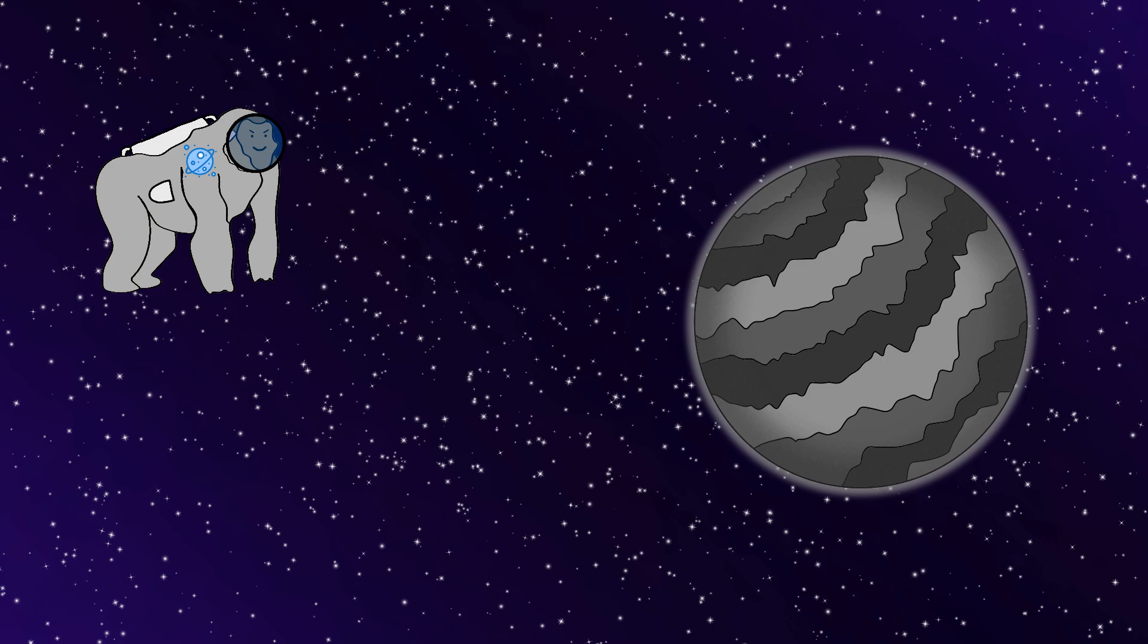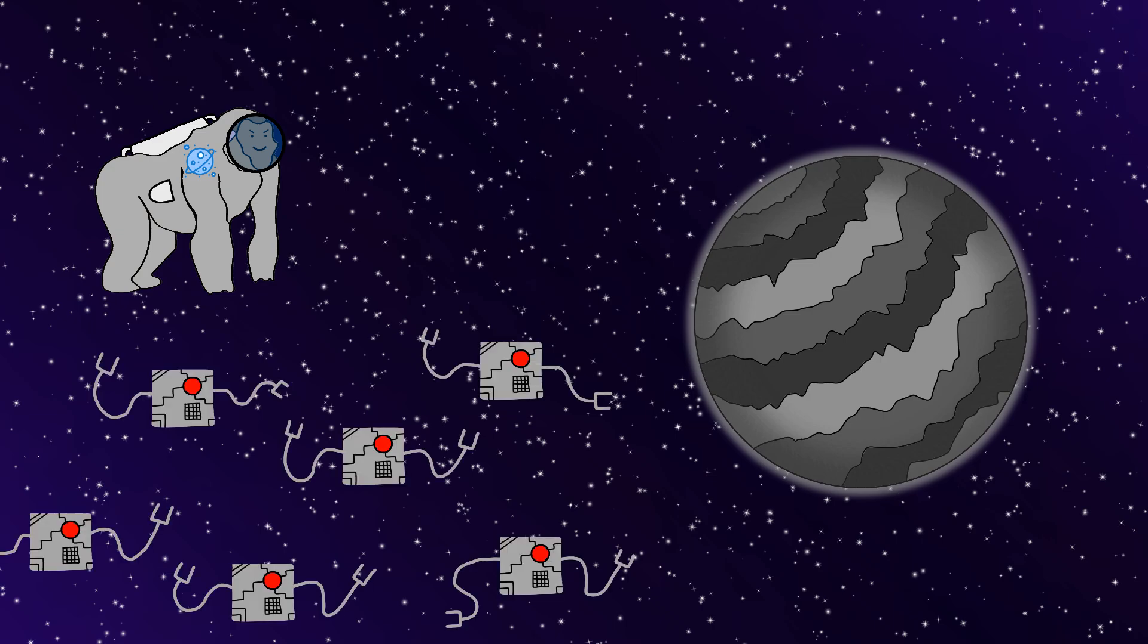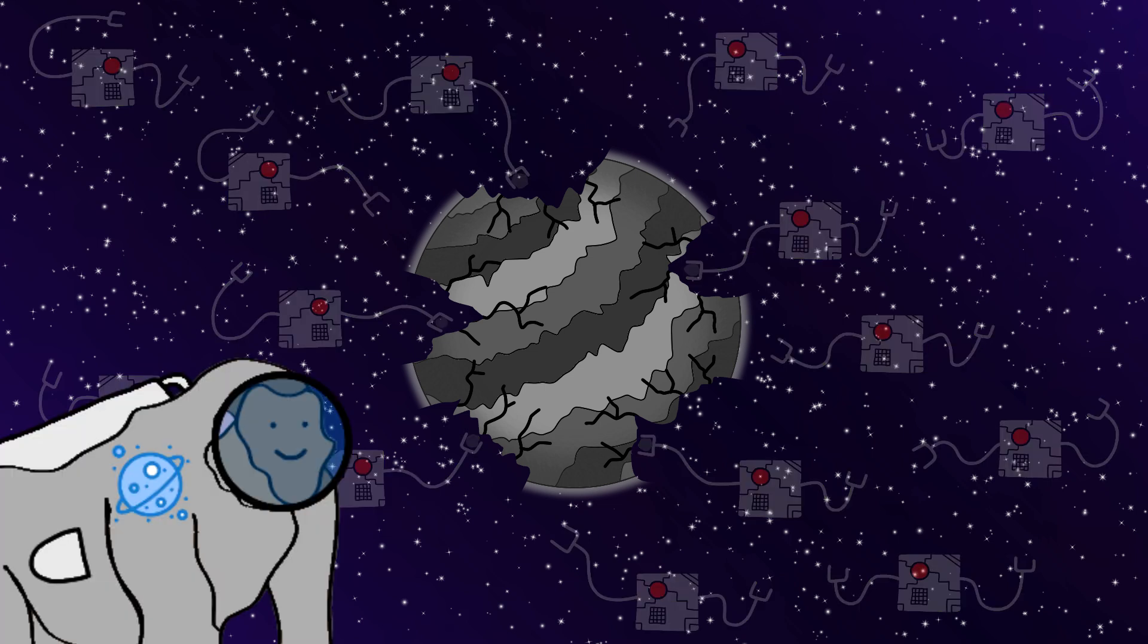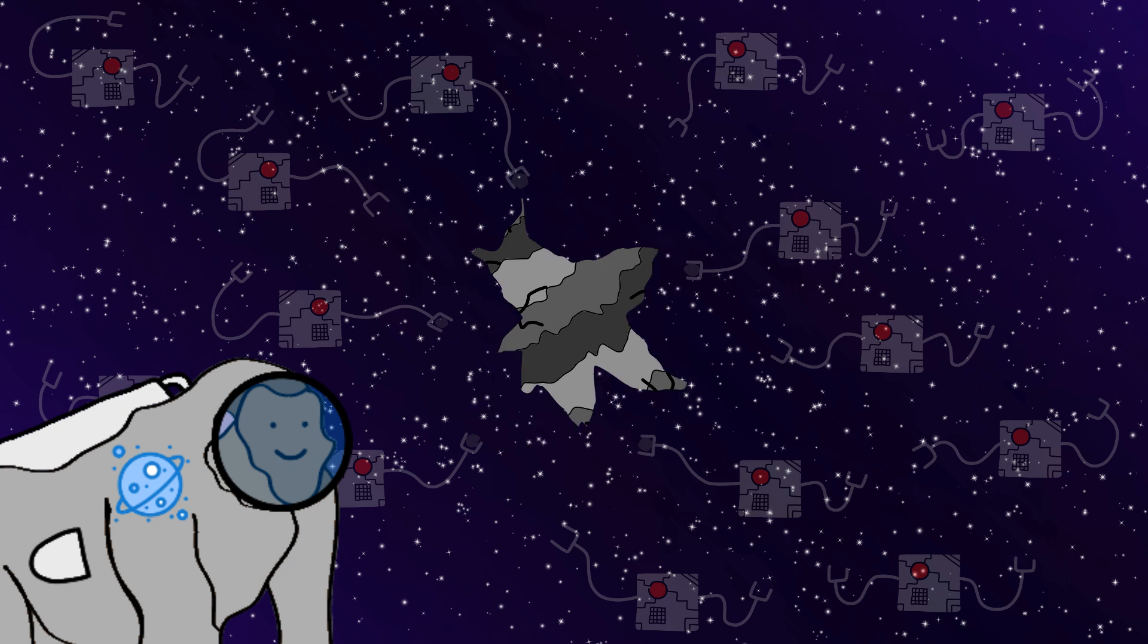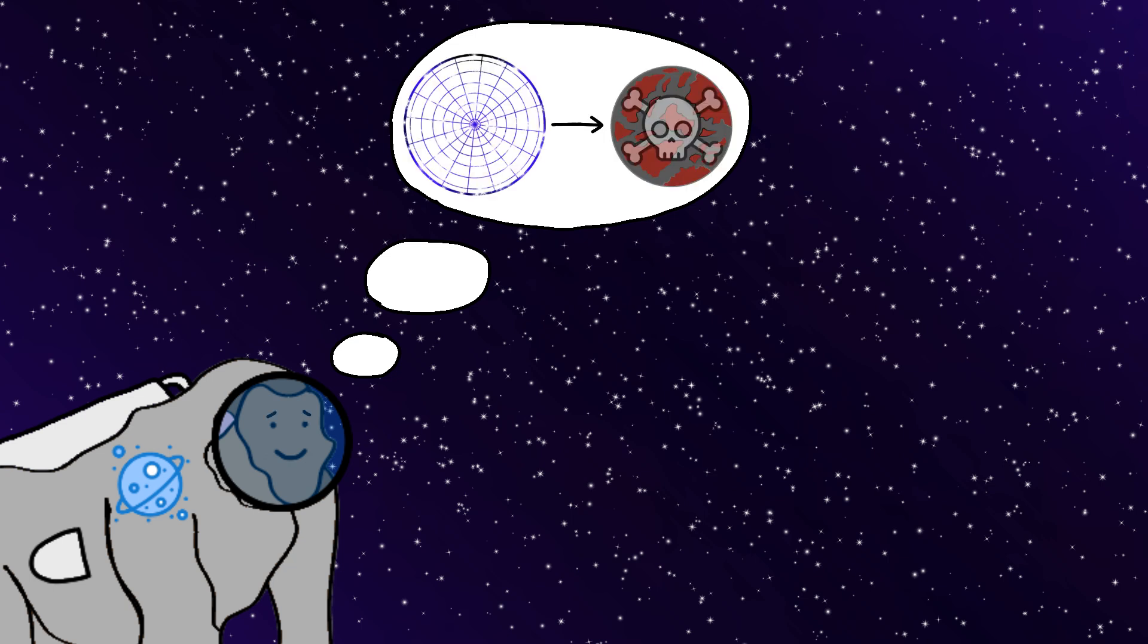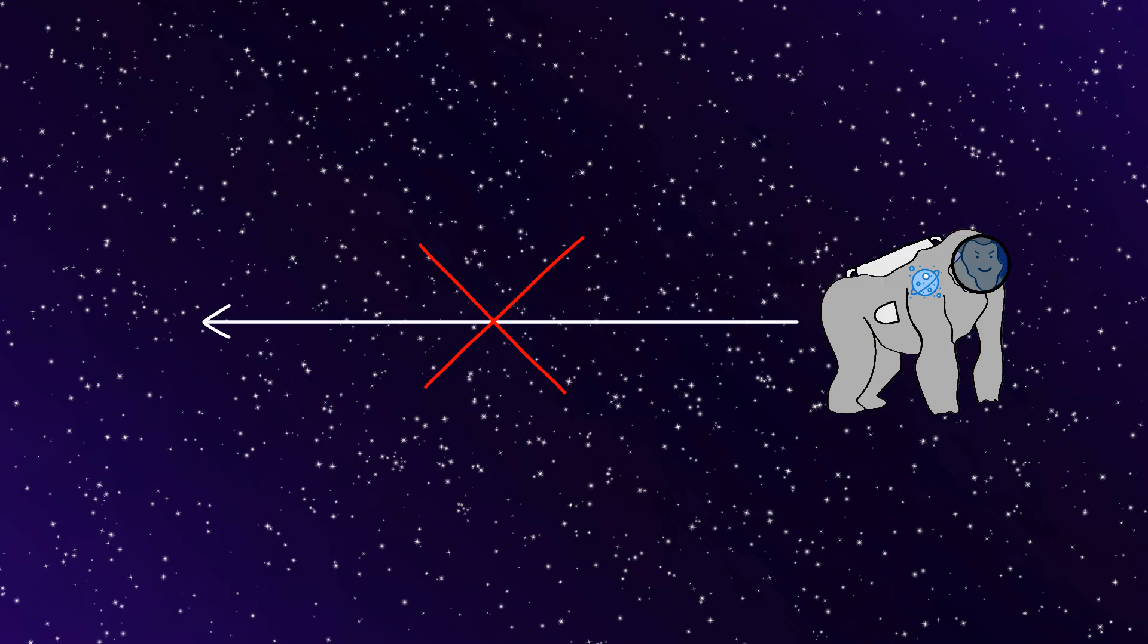So Monkey unleashes an army of self-replicating robots on Mercury. And these little guys start tearing the entire planet apart, piece by piece. And Monkey's watching Mercury slowly disappear, thinking this is either the coolest demolition project ever, or Monkey is about to regret this decision for the rest of eternity. But Monkey's committed now, and there's no going back.